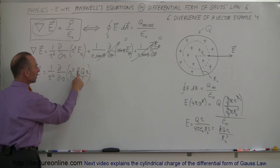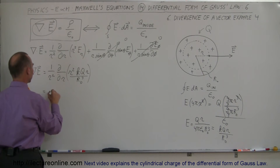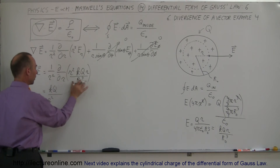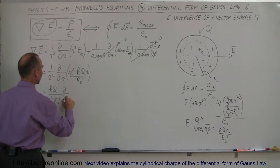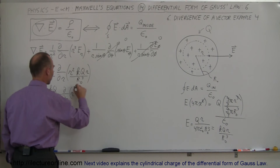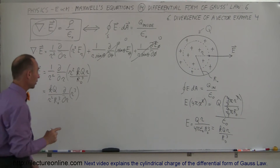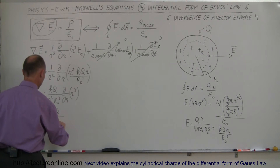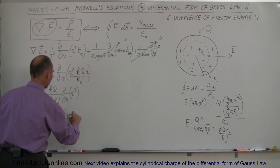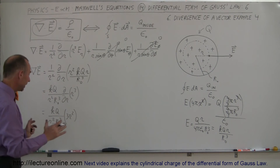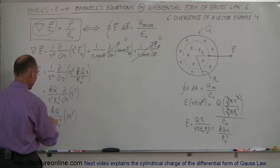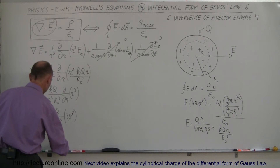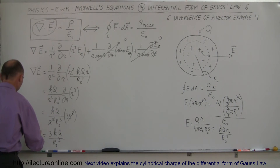KQ and R sub nought cubed are constants, so they come out front. We have KQ over R sub nought cubed, multiplied by one over r squared, times the partial derivative with respect to r of r squared times r, which is r cubed. Taking that partial derivative gives 3r squared. So we get KQ over R sub nought cubed times one over r squared times 3r squared. The r squared cancels, leaving us with 3KQ over R sub nought cubed — that is the divergence of the electric field.